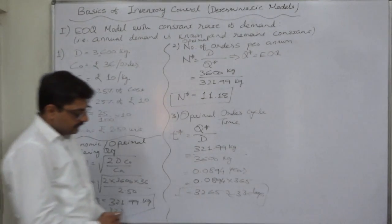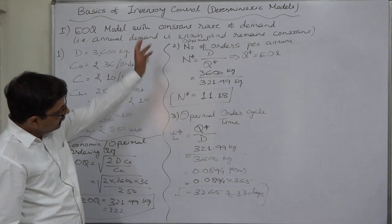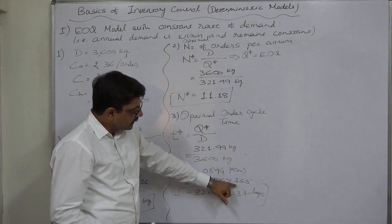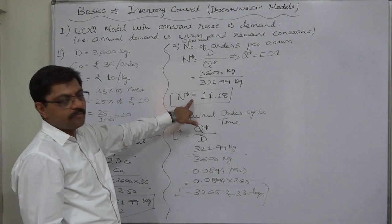Now, this can also be calculated in other way. If we divide 365 by number of orders, then also more or less similar answer can be derived.